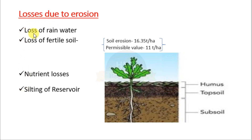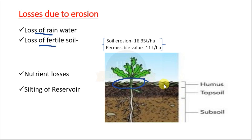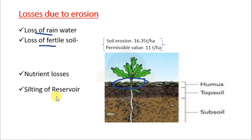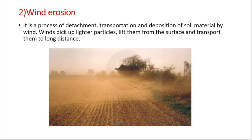The losses due to erosion include: first, loss of rainwater — in dryland areas, rainwater is the only source for irrigation and during soil erosion most of it is lost. Second, loss of fertile soil — in India, 16.35 tons of soil are eroded annually, far exceeding permissible values. Third, nutrient losses — the topmost layer rich in humus, organic matter, and minerals is eroded first, a big loss for farmers. Fourth, silting of reservoirs — as water reaches the reservoir, velocity is reduced and sediments settle on the floor, gradually decreasing reservoir depth.